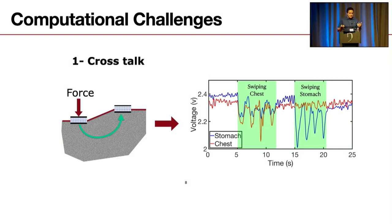There is an example shown in this graph here. It shows a swiping session followed by swiping chest followed by swiping stomach. And during the swiping chest, you can see the chest and the stomach sensor both picking up the signals. But when we swipe the stomach, only the stomach sensor picks up the signal, which means we have crosstalk, but even the crosstalk is not symmetric; it's asymmetric crosstalk.